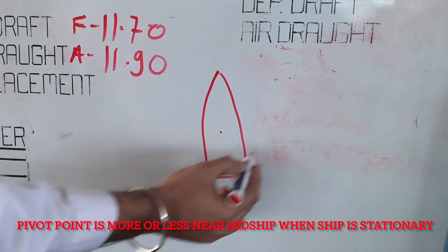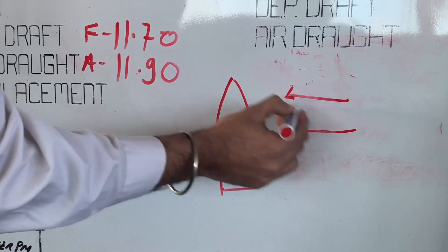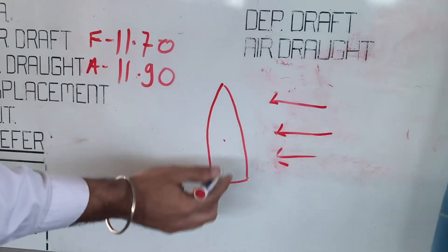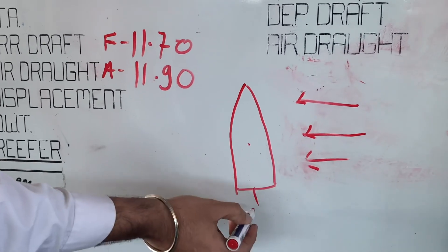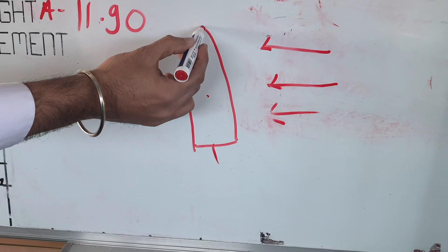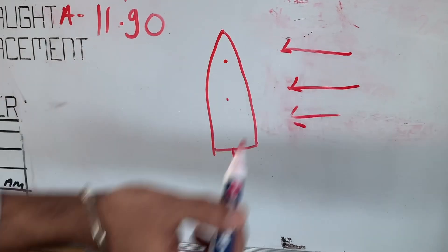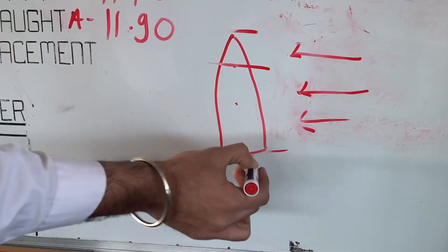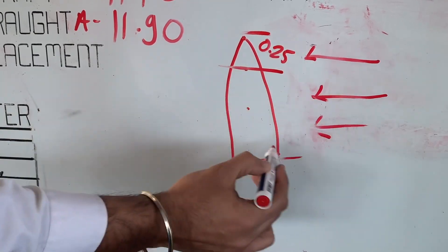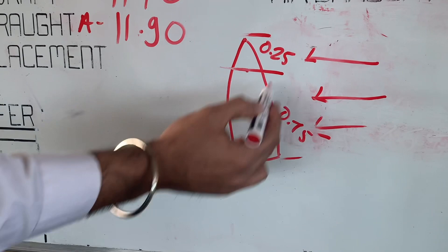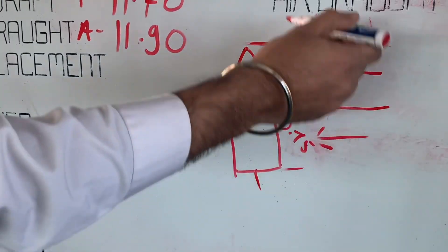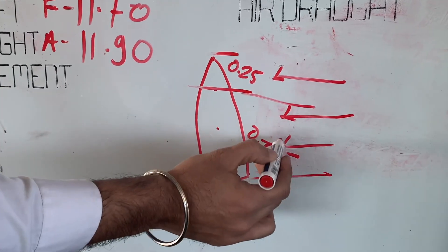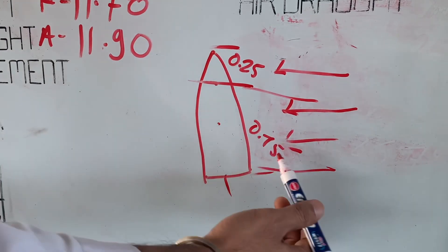If the pivot point is here, roughly in the center, and the wind is pushing from the starboard side, the full ship would bodily move to the port side. But when the ship is moving and a kick is given ahead, the pivot point shifts right forward and eventually settles at about 25% from the bow. So the force is divided: one-quarter forward of the pivot point and three-quarters aft. The larger area aft means the wind is affecting a much larger section of the hull.